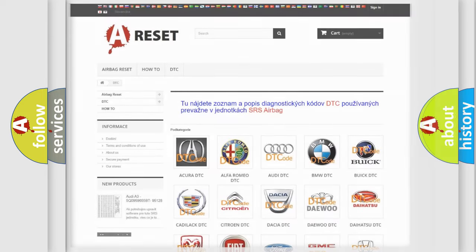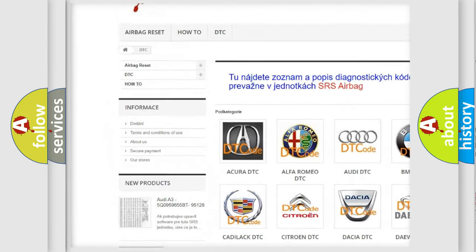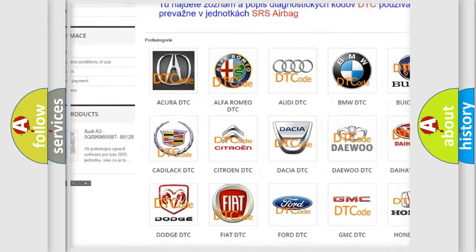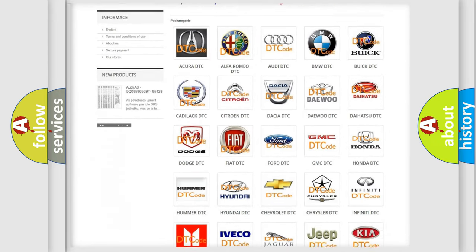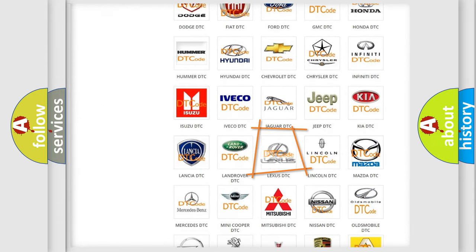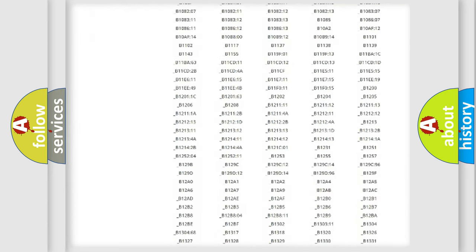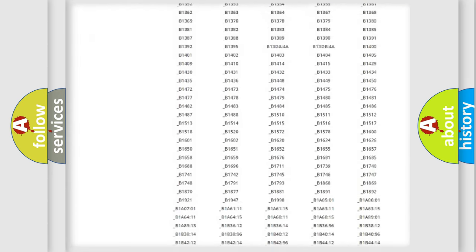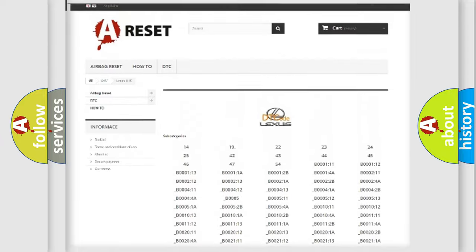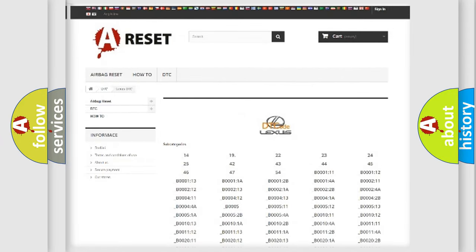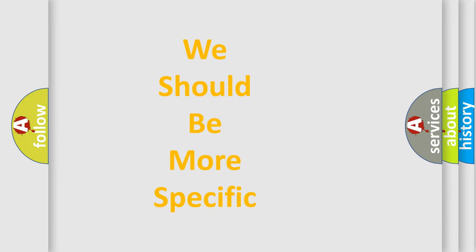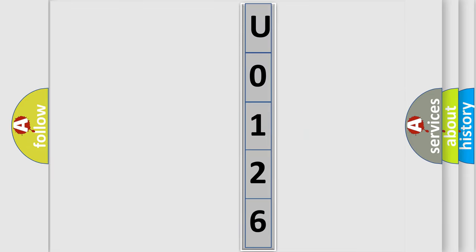Our website airbagreset.sk produces useful videos for you. You do not have to go through the OBD2 protocol anymore to know how to troubleshoot any car breakdown. You will find all the diagnostic codes that can be diagnosed in Lexus vehicles, and many other useful things. The following demonstration will help you look into the world of software for car control units.